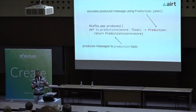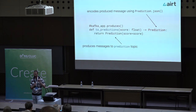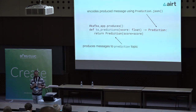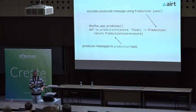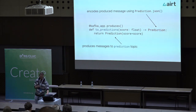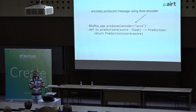Producing is quite similar to consuming. You write your function, it gets some inputs, and you specify which type you want to return — in our case a prediction. Then you decorate it with app.produces. Whenever you call your function in your Python code, the side effect of returning the prediction is that it will also be taken and produced to a Kafka topic. Once decorated, you can use it anywhere in your Python code and the return values will just magically appear in your Kafka. If you want to encode in Avro instead of JSON, you just define it in the decoder.